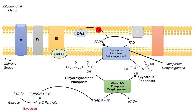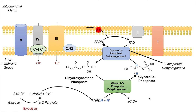Once we have ubiquinol, it can travel to complex 3, give its electrons to cytochrome C, and this leads to complex 3 pumping 4 protons into the intermembrane space. Once cytochrome C has the electrons, it transports them to complex 4, which pumps 2 protons into the intermembrane space. Once enough protons are in the intermembrane space, they are pumped back across into the mitochondrial matrix through complex 5, or ATP synthase. Every 4 protons pumped across ATP synthase produces 1 ATP. So with 4 plus 2 equals 6 protons, we get 6 divided by 4 equals 1.5 ATP.